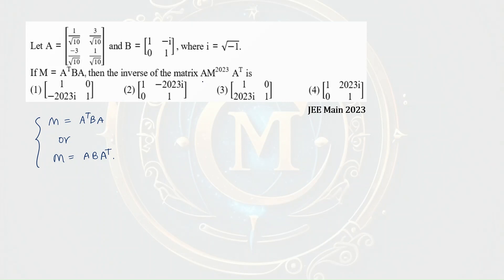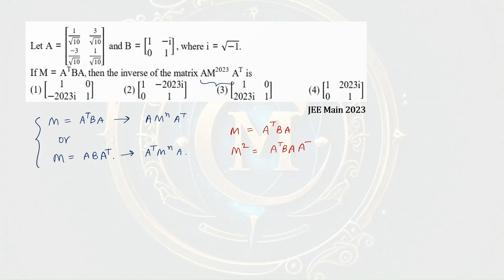You will be asked to find A times M to the power n times A transpose, or A transpose times M to the power n times A. If M equals A transpose BA, then M squared equals A transpose BA times A transpose BA. Since A times A transpose equals the identity matrix, this simplifies to A transpose B squared A. So M to the power n equals A transpose B to the power n times A.